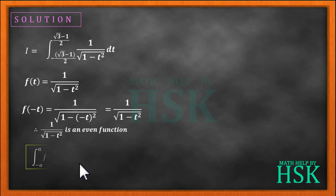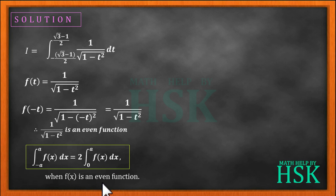Applying the property of definite integrals, that f x dx from minus a to a is equal to 2 times f x dx from 0 to a, when it is known that f is an even function.